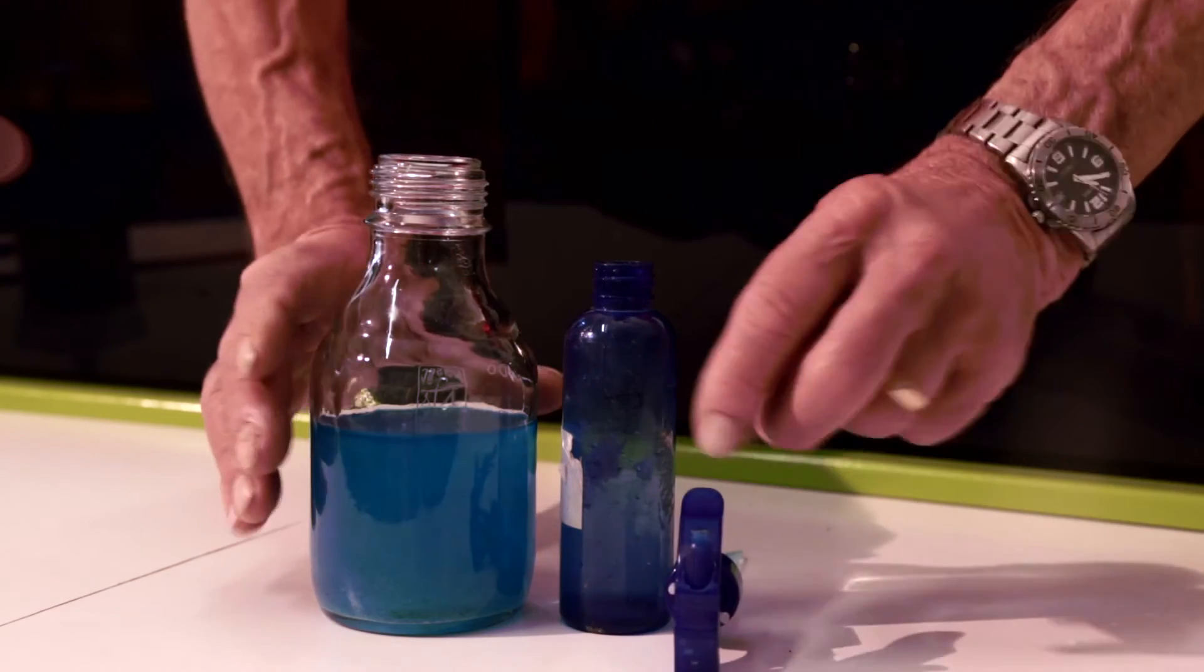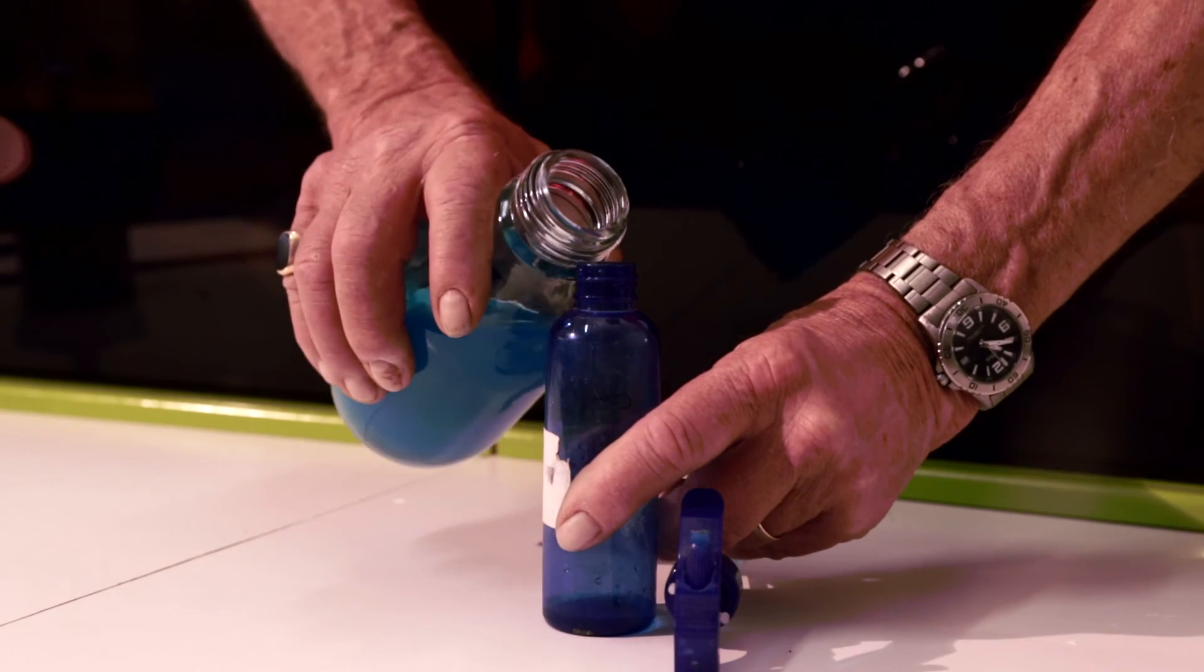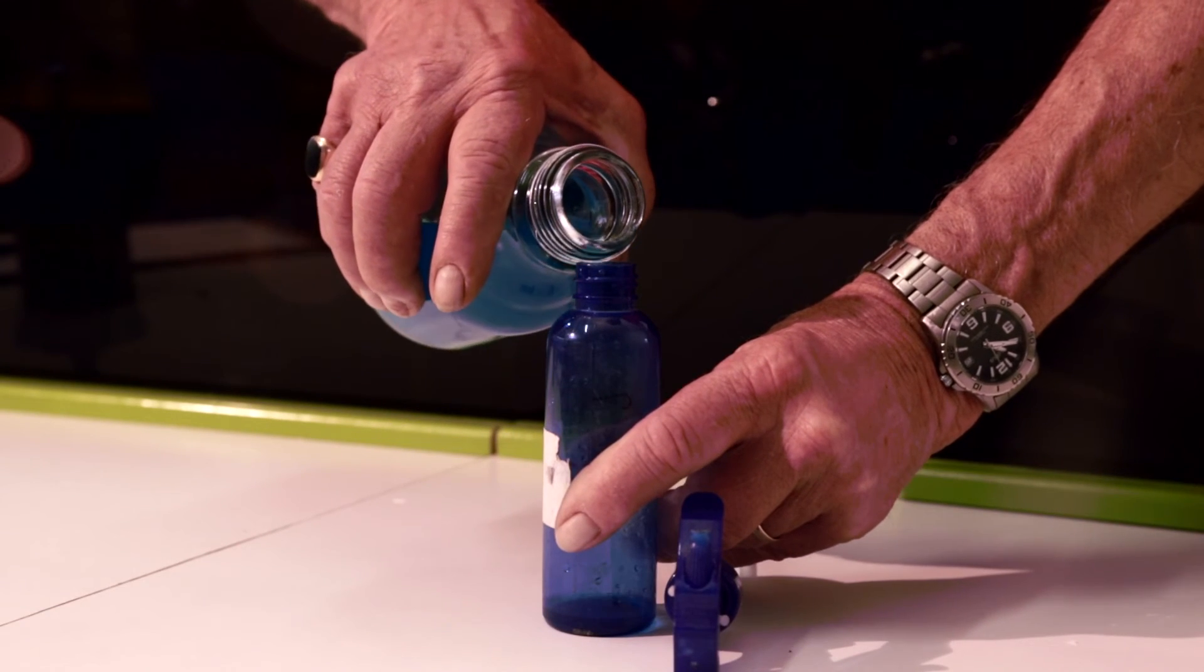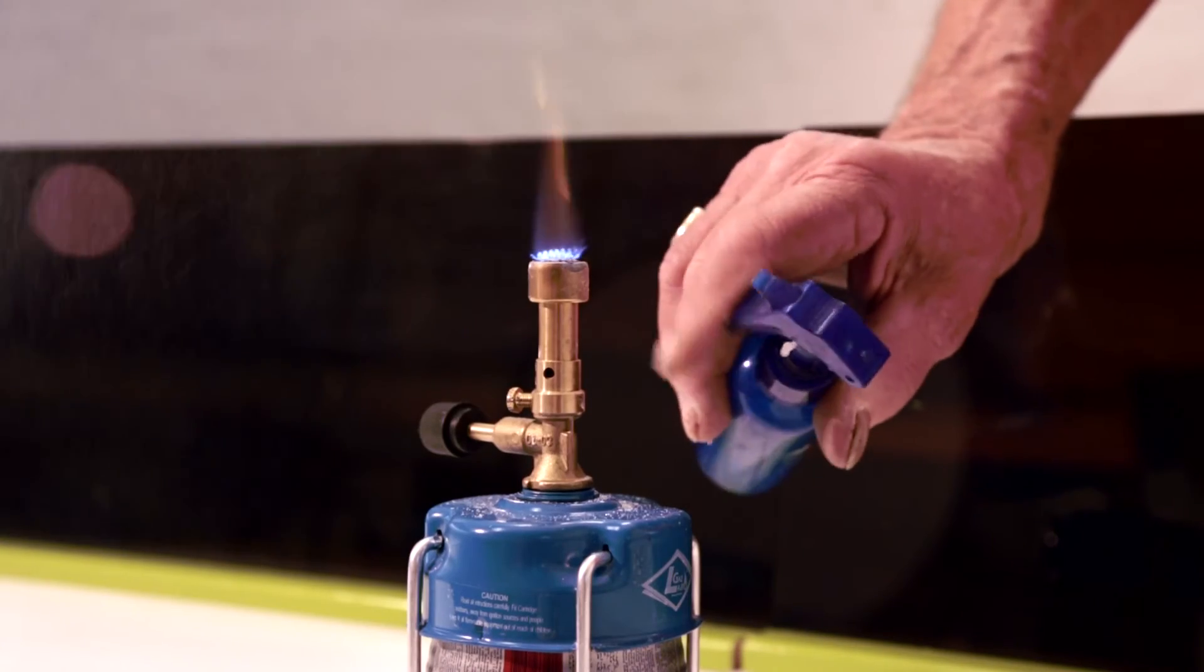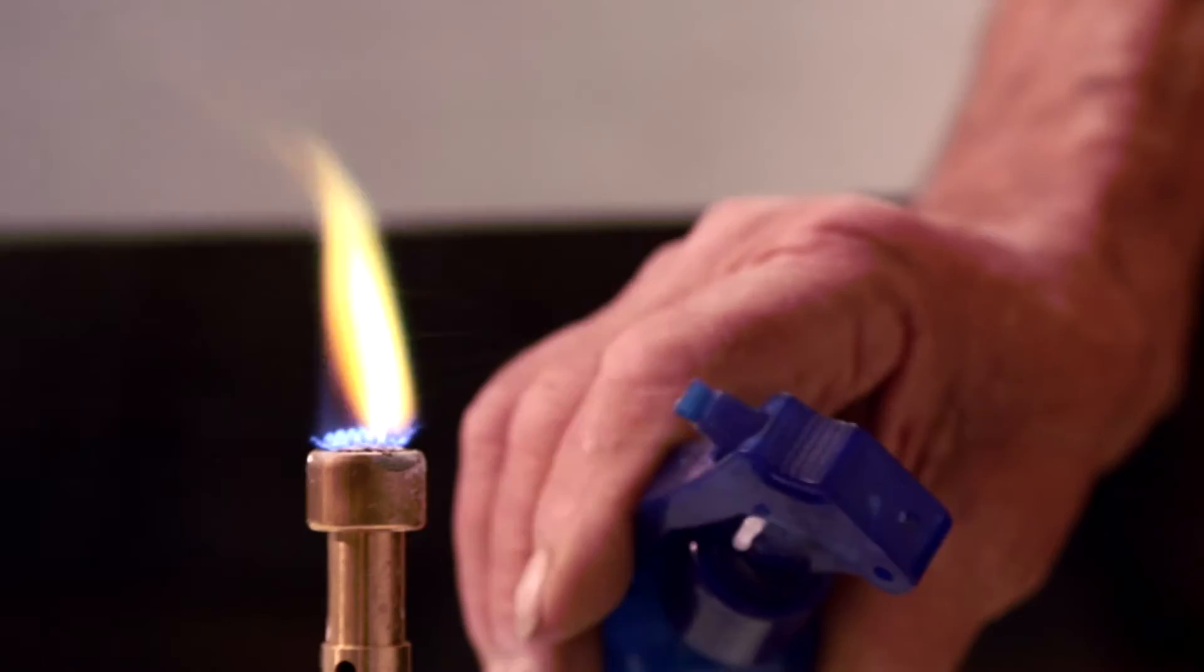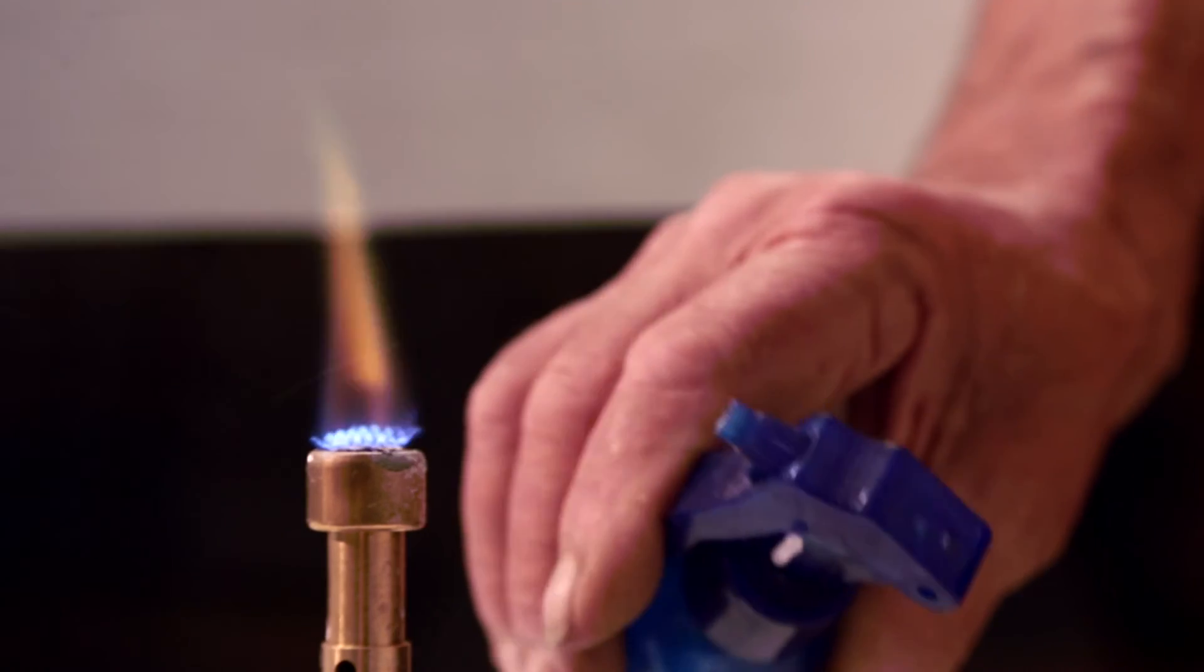A second method: An alternative method can be used. Place a fairly concentrated solution of the salt into a clean spray bottle. Gently spray the solution into the flame and note the color of the flame.